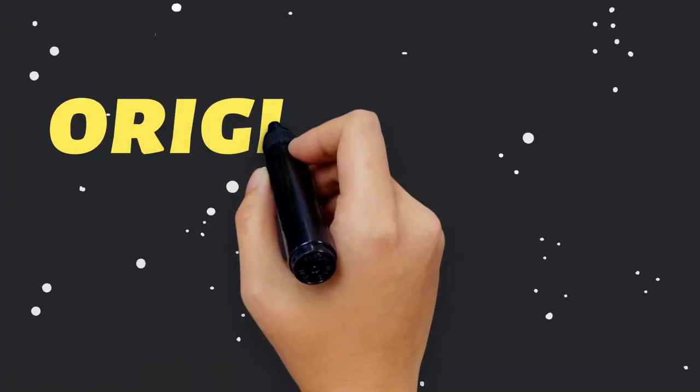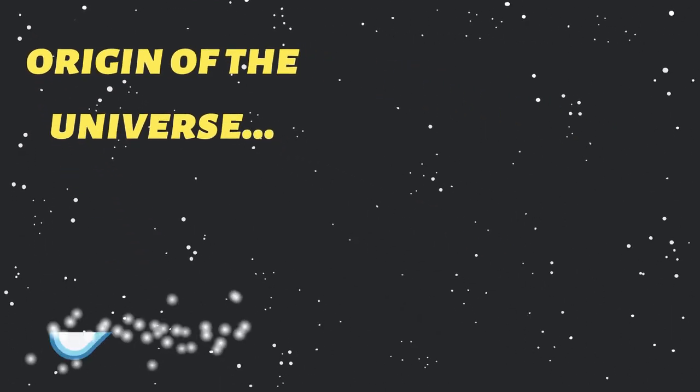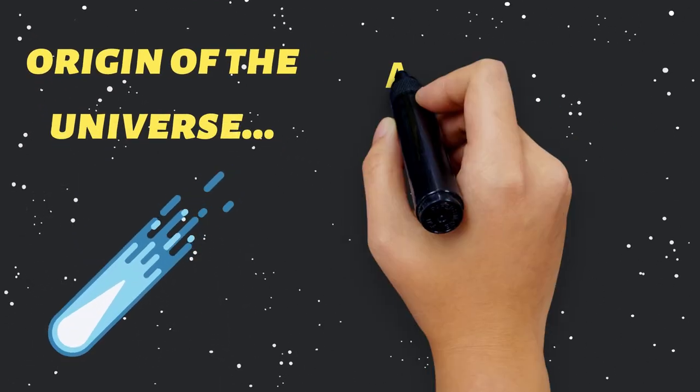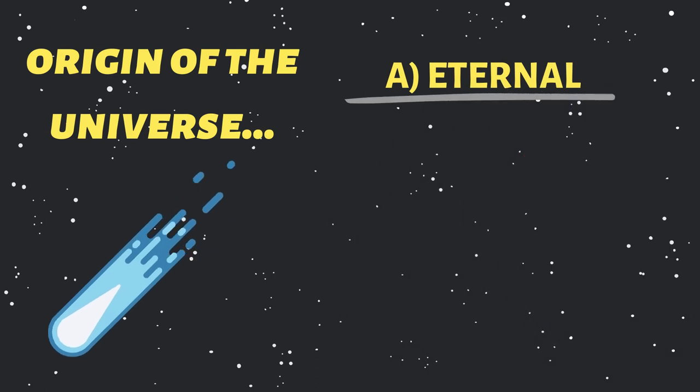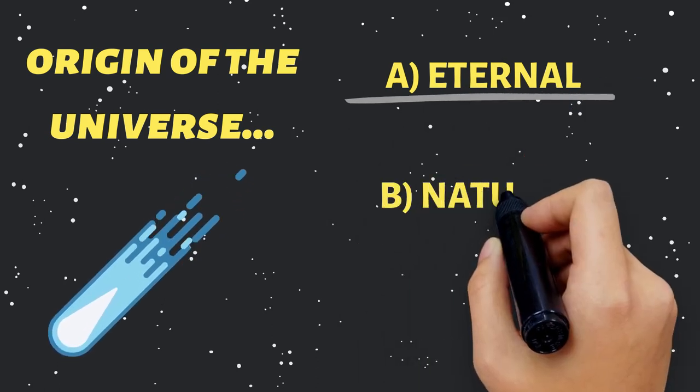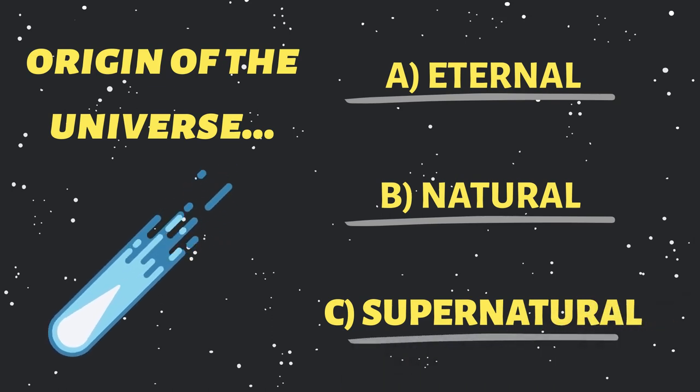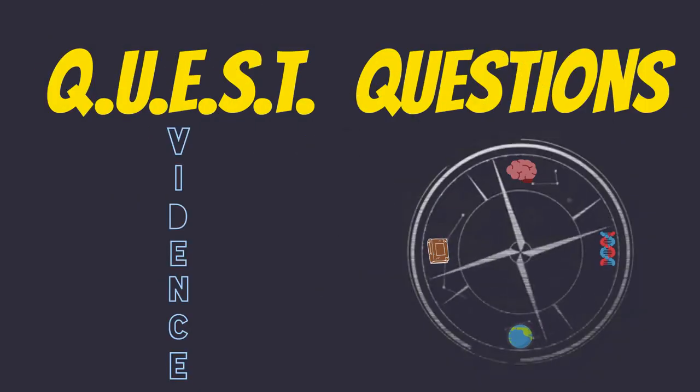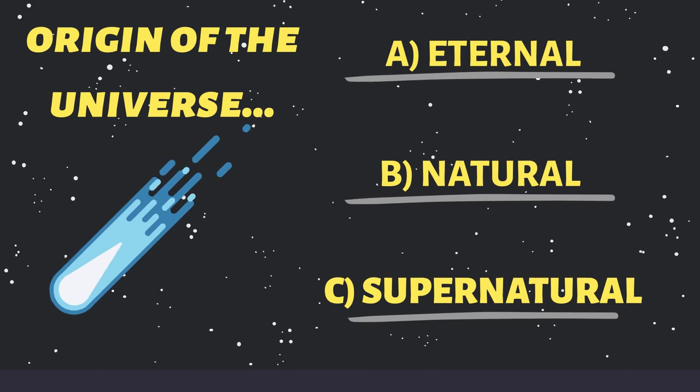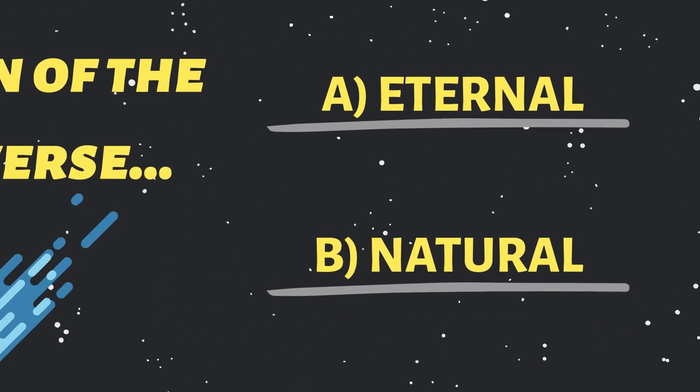All the science aside, the universe can only have one of three origins. It can be eternal, it can have a natural origin, or it can have a supernatural beginning. Let's take a look at the first option. Is the universe eternal?